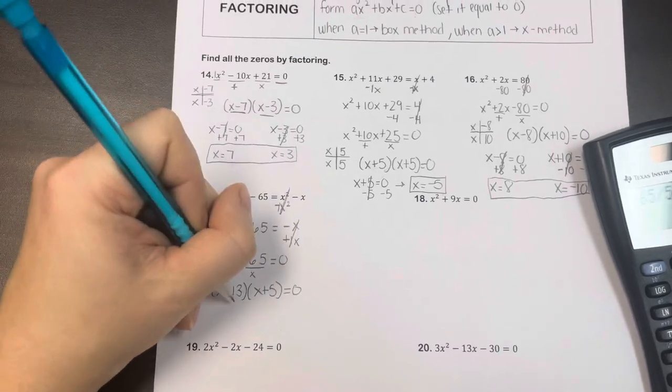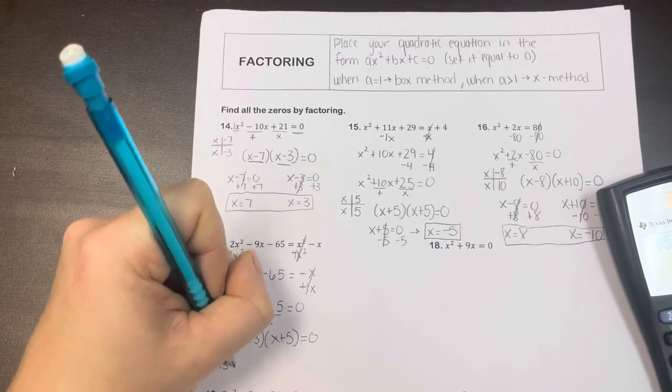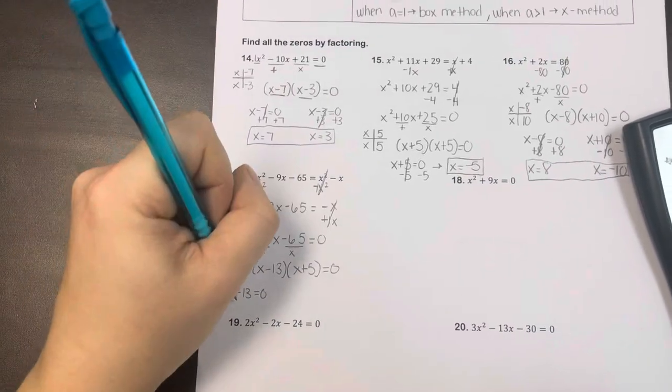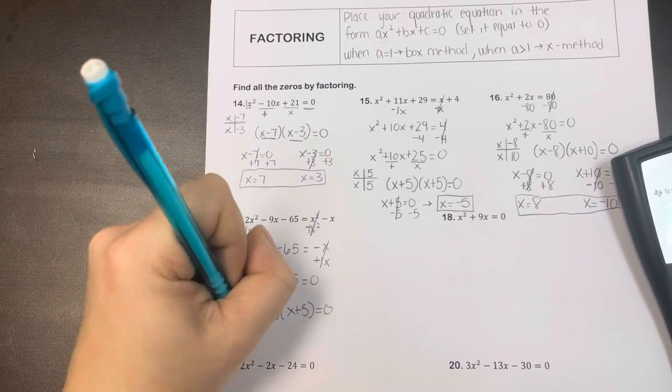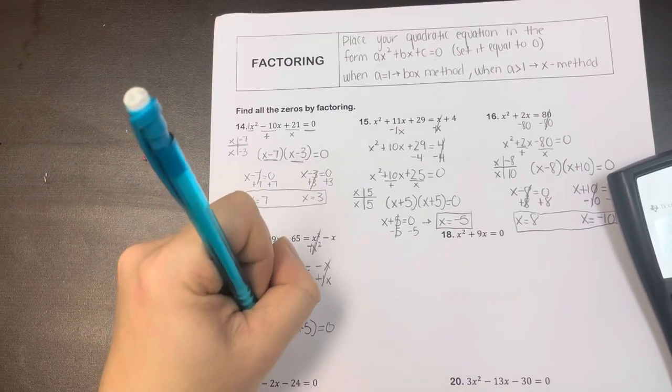what you could do to check is you can take the x minus 13 and set it equal to 0, and then solve for x by adding 13 to both sides, and we would get x is 13.